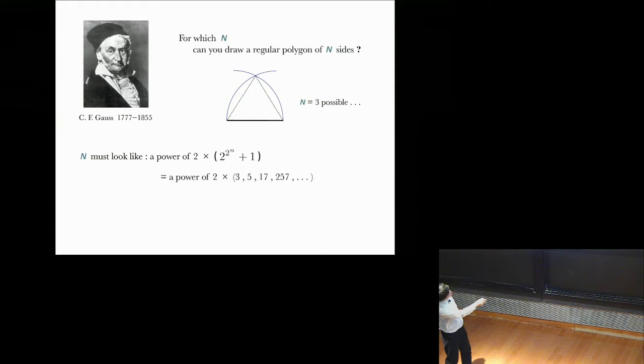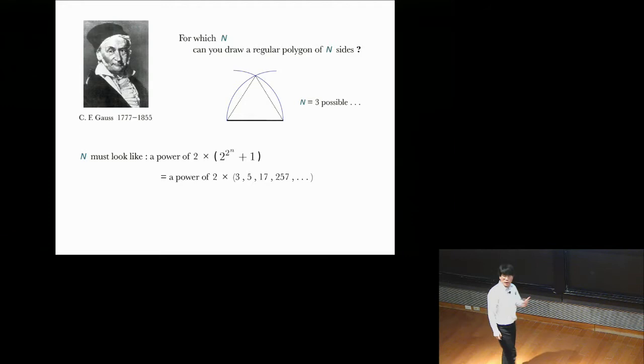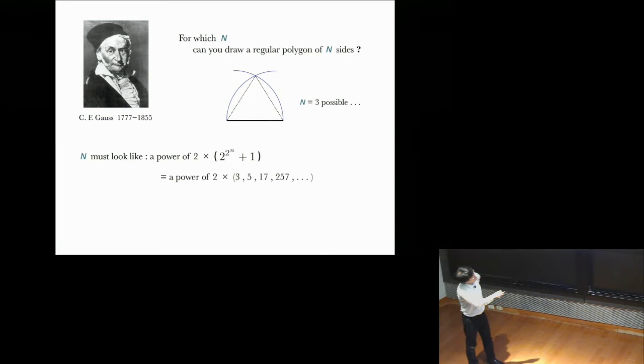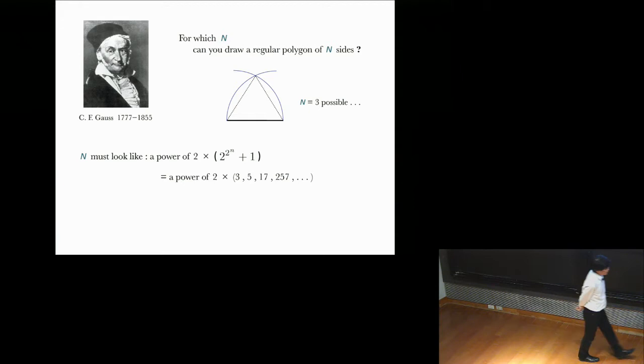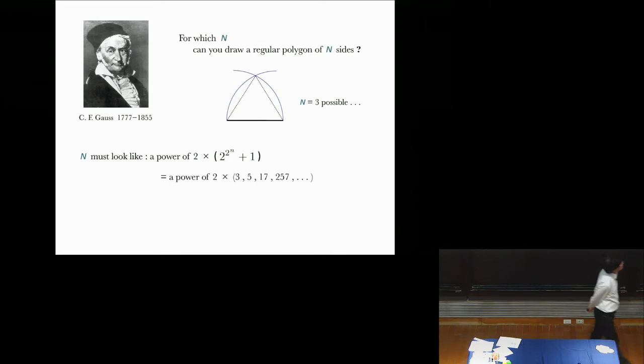Still with ruler and compass alone. And we learn from Gauss that effectively the number n must be of a very special type. What I'm writing here is actually not quite correct, but please forgive me. In front, I put the power of 2, but that's to jazz up the results. It's not quite important because once you have, for example, something like a regular 5-gon, you can always divide each of the sides into two equal parts so you can get a 10-gon. So you can always double the number of sides. That's no problem. The essential part is this thing. This funny-looking number, which says 2 to 2 to small n plus 1, those numbers are called Fermat numbers.